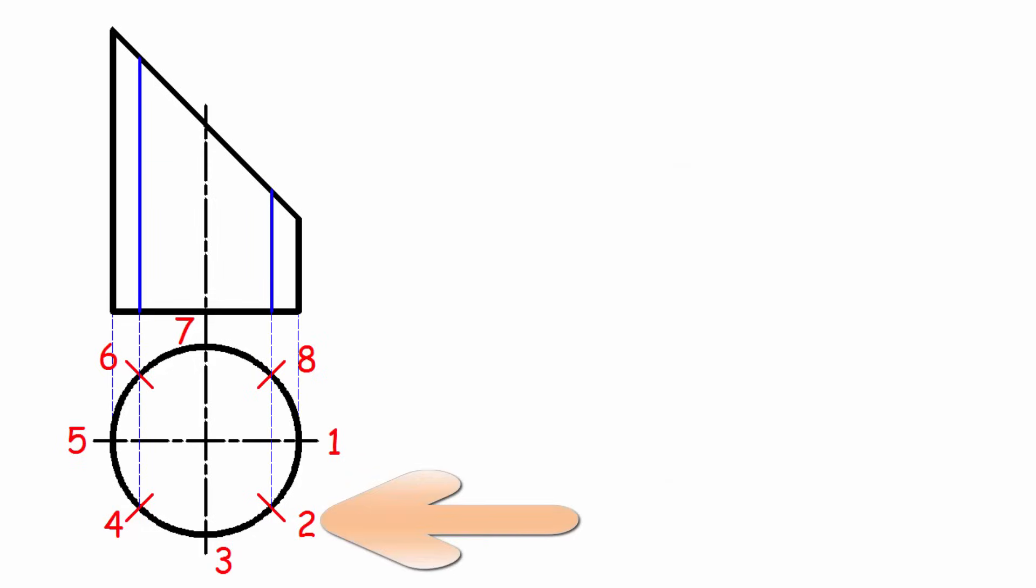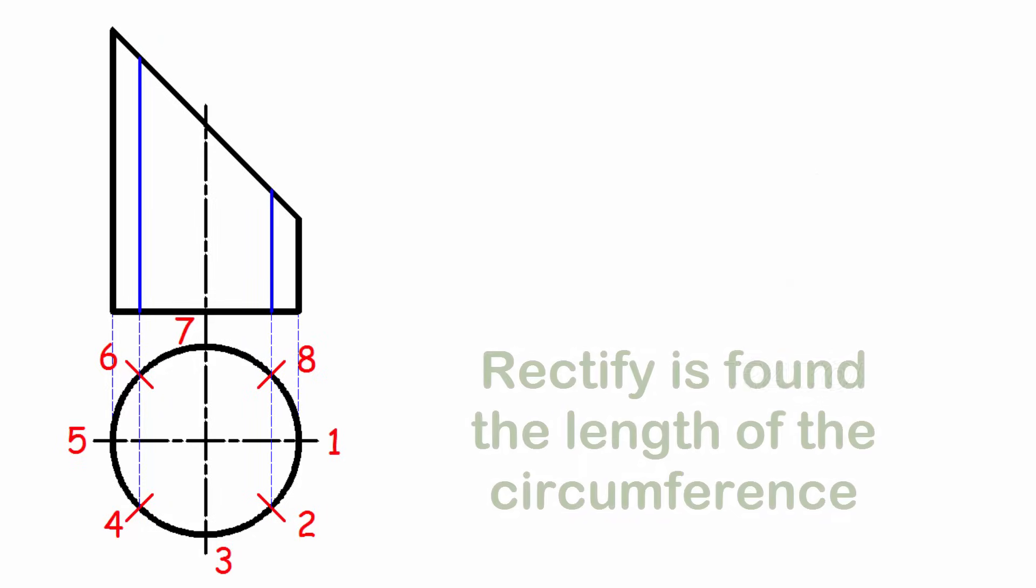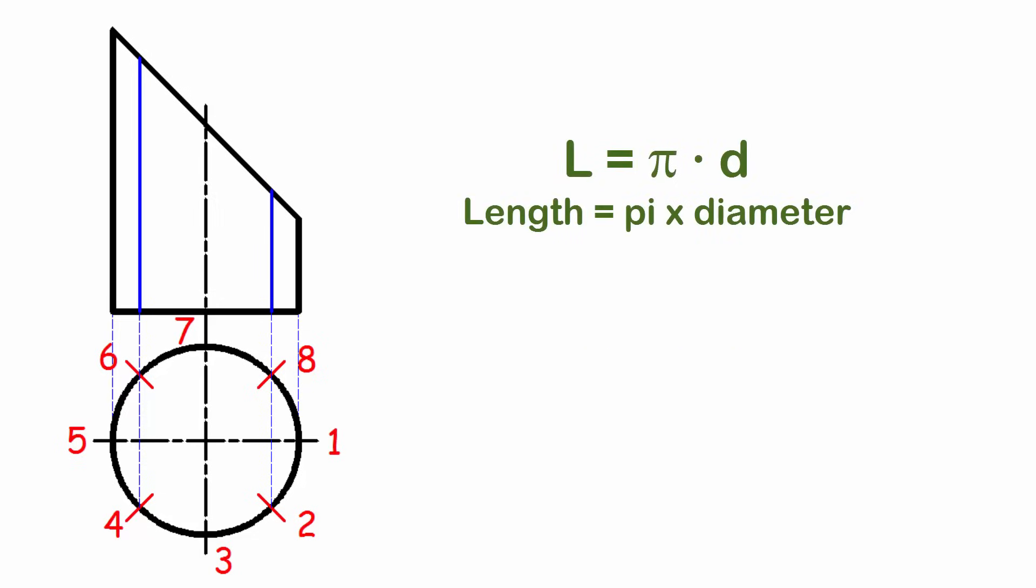In elevation we climb the divisions forming the generatrices of the shell. Now let's find the length of the rectified circumference. To do this we multiply pi times the diameter or multiply 2*pi times the radius. To use pi with a value of 3.14 is usually enough.